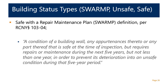I will now detail the various classifications for building facades, of which there are three. First is Safe with a Repair and Maintenance Plan, or SWAMP. It is defined within RCNY as a condition of a building — any appurtenance thereto or any part thereof — that is safe at the time of inspection but requires repairs or maintenance during the next five years, but not less than one year, in order to prevent its deterioration into an unsafe condition during that five-year period.